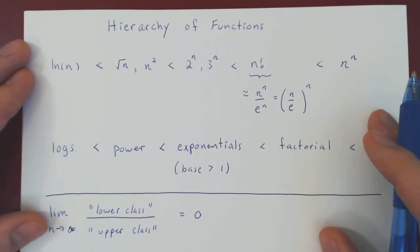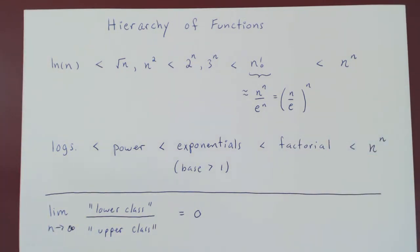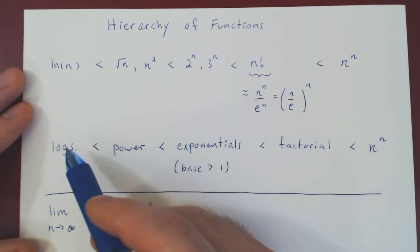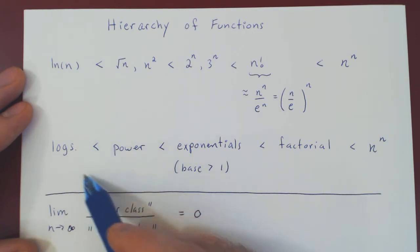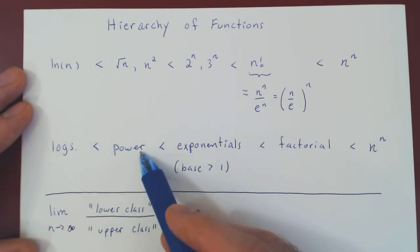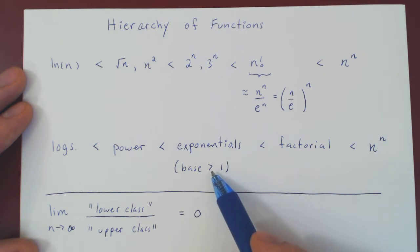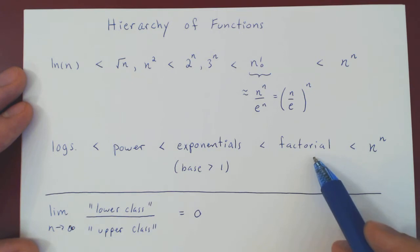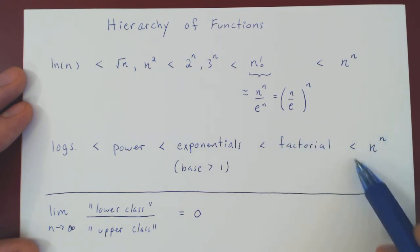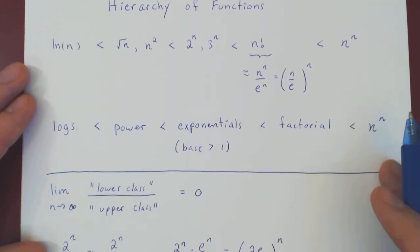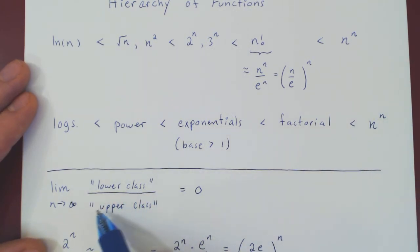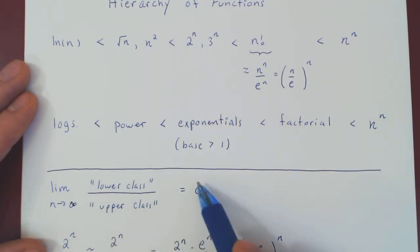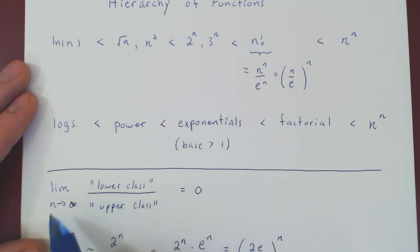So keep this in mind: if you ever ask yourself, when you have multiple functions, which ones are larger or smaller than others — logs are much smaller than powers of n, which are much smaller than exponentials with a base larger than one, which are much smaller than the factorial, which in turn is much smaller than n to the n. By smaller, we mean that any lower class function over an upper class function will shrink to zero as n gets bigger and bigger.